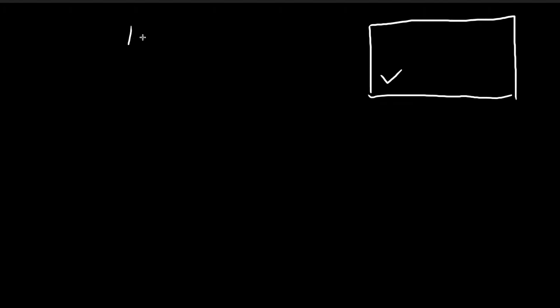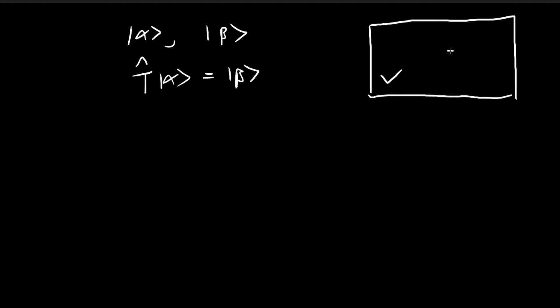Let's say I have a vector space, and let's call this vector space V. Then let's say I have two vectors from this vector space: a vector called alpha and a vector called beta, and the two are related like this. I'm going to apply a certain linear transformation to alpha, and it is going to give me beta. So this linear transformation transforms one vector, alpha, which is from this vector space, into another vector, beta, which is also from this vector space. For our purposes, we're just going to focus on the case where the transformation happens within the same vector space, so both alpha and beta are within the same vector space.